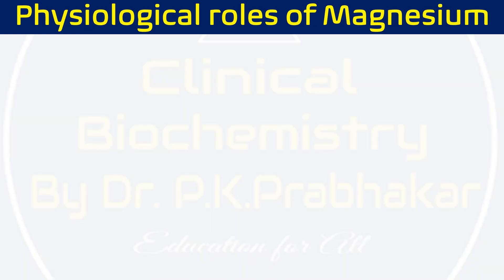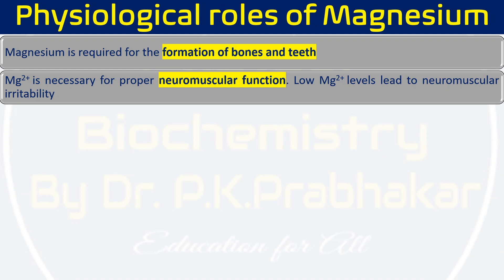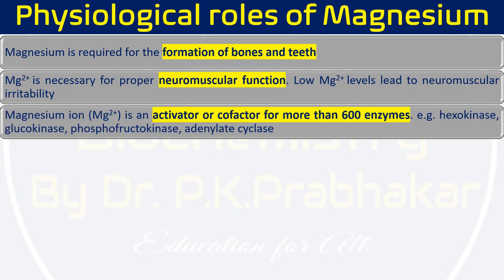Magnesium is required for the formation of bone and teeth, which is why 70% — roughly 14 grams — is found there. Magnesium ion is essential for the proper functioning of neuromuscular functions; deficiency leads to neuromuscular irritability. Magnesium ion is also an activator or cofactor for more than 600 enzymes, including hexokinase, glucokinase, phosphofructokinase, and adenylate cyclase.